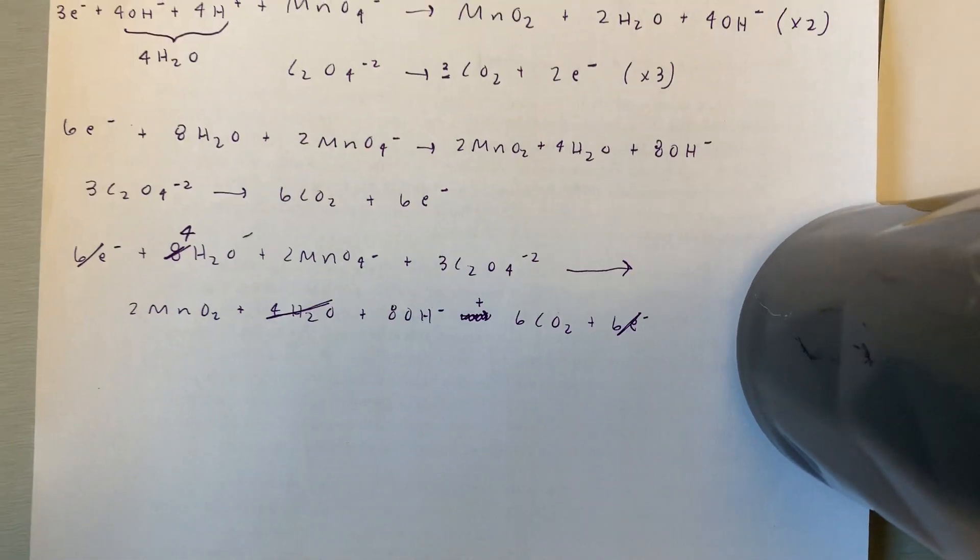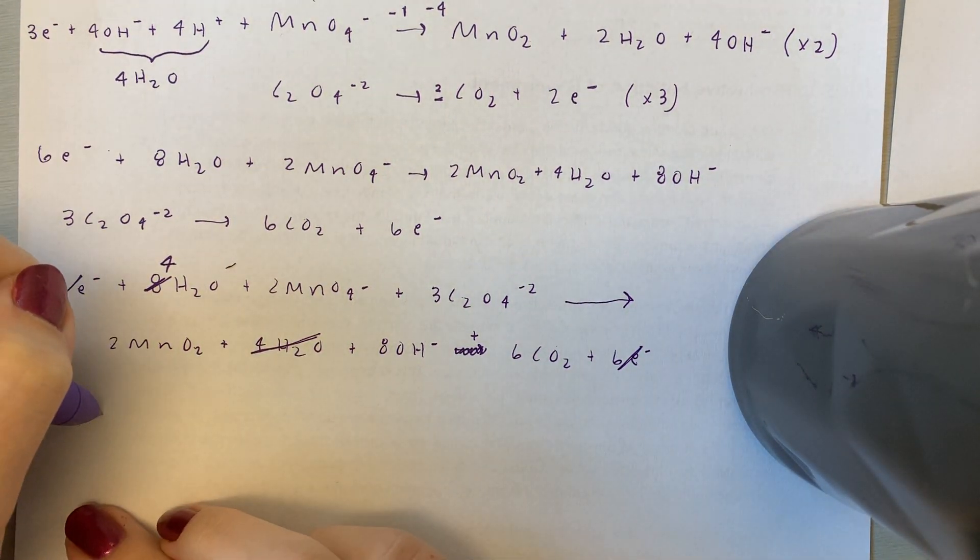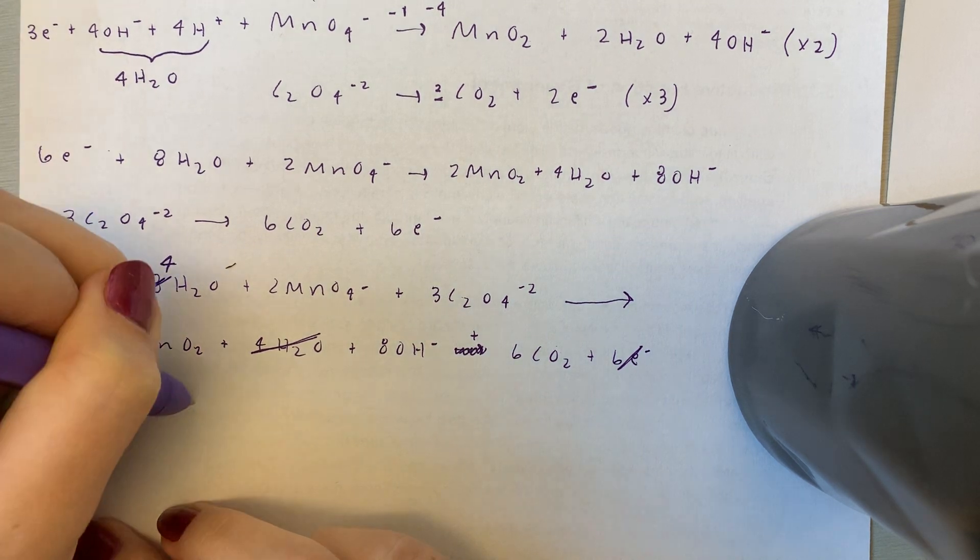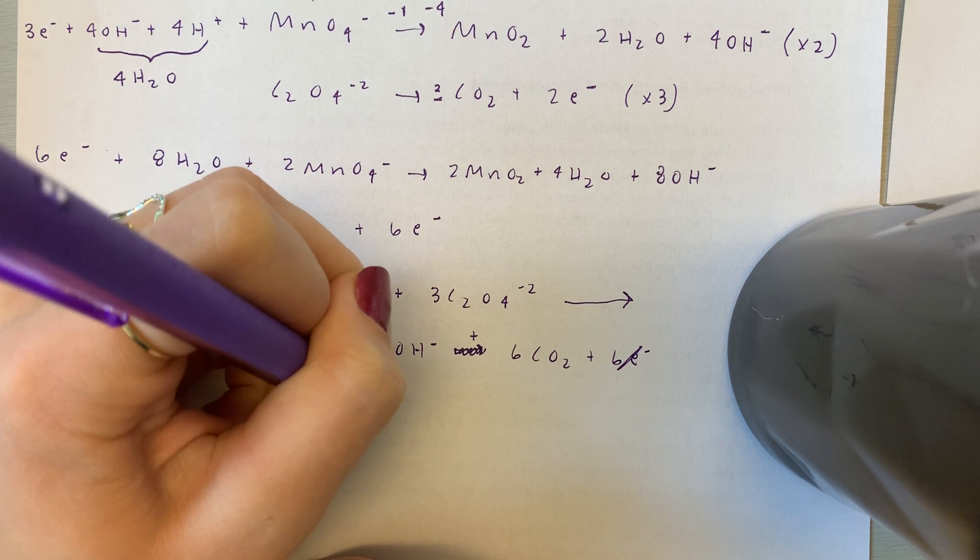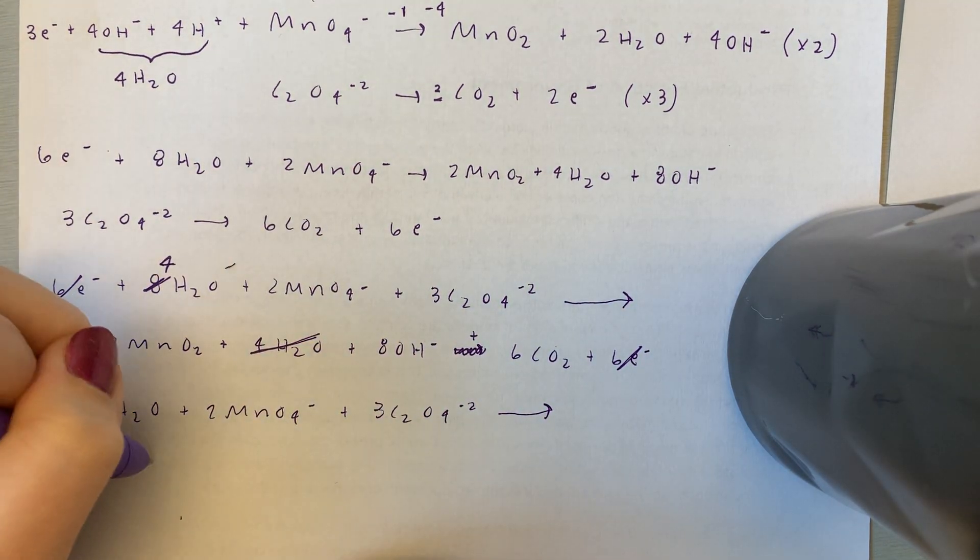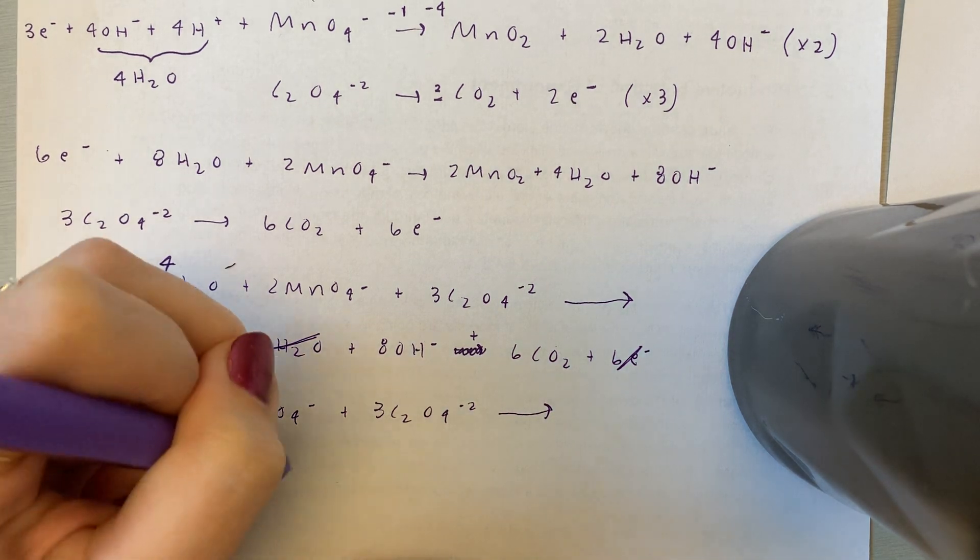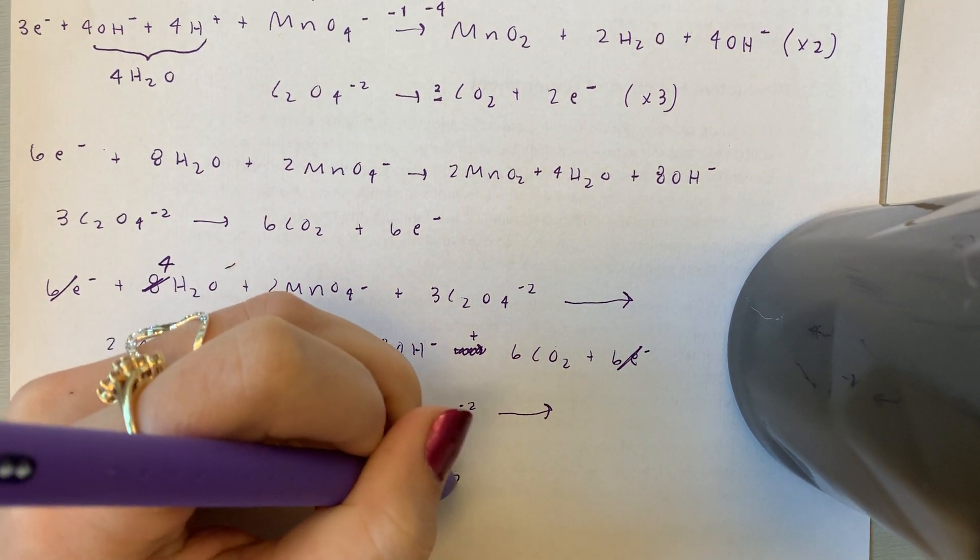So now we're going to move this and hope that it doesn't fall. It didn't fall. So I'm going to rewrite down here, 4H2O plus 2MnO4 minus plus 3C2O4 minus 2 goes to 2MnO2 plus 8OH minus plus 6CO2.